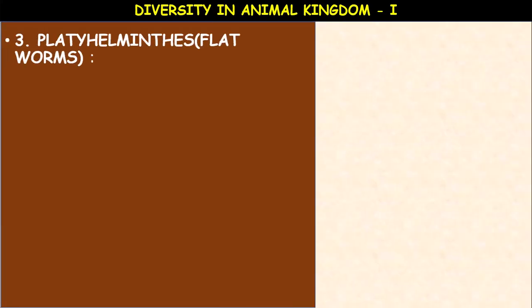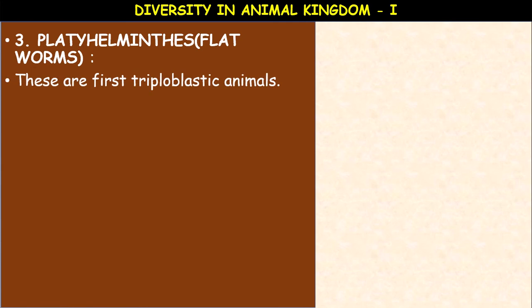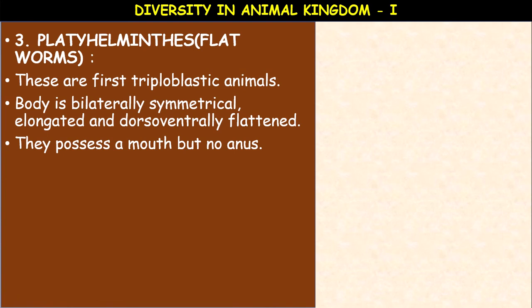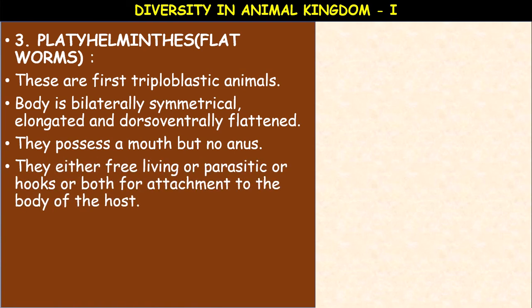Next phylum: Platyhelminthes — also called flatworms. These are the first triploblastic animals. Triploblastic means the cells are arranged in three germinal layers: ectoderm, endoderm, and mesoderm — outer ectoderm, middle mesoderm, and inner endoderm. The body is bilaterally symmetrical — bilaterally symmetrical means we can divide the organism into two equal halves in only one plane. The body is elongated and dorso-ventrally flattened — that is why they are called flatworms. They possess a mouth but no anus. They are either free-living or parasitic.